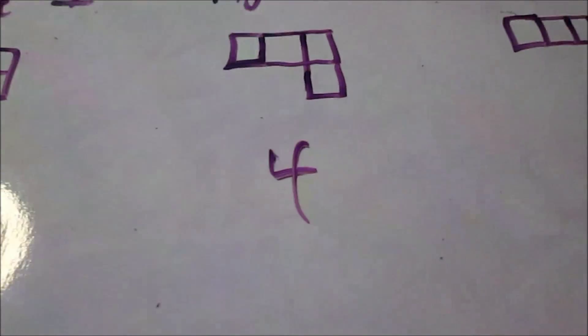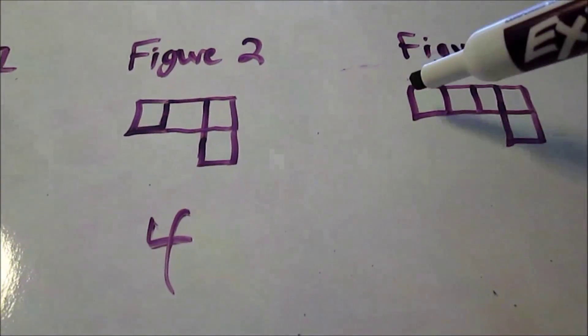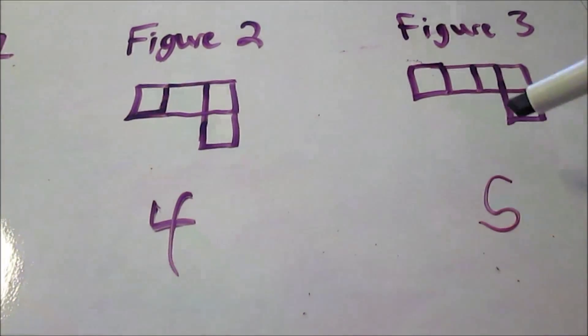Figure two has one, two, three, four, four blocks. Figure three has one, two, three, four, five blocks.